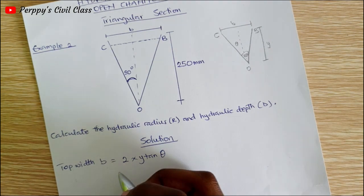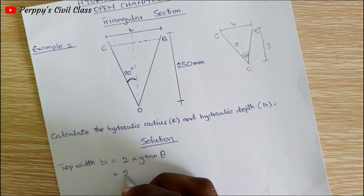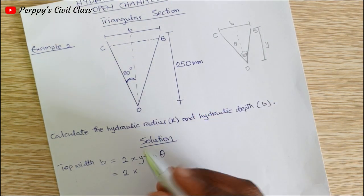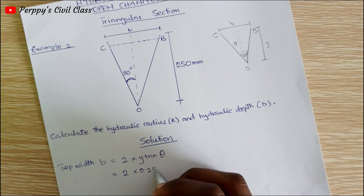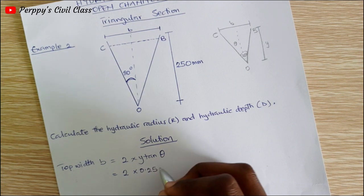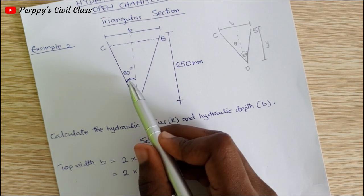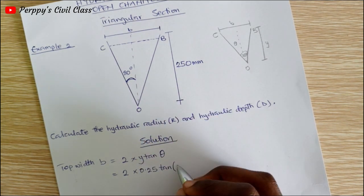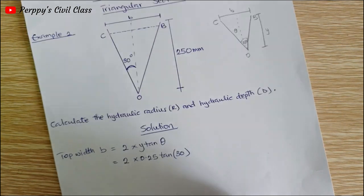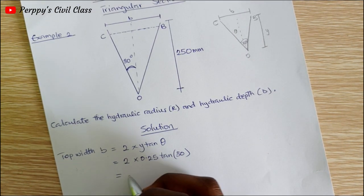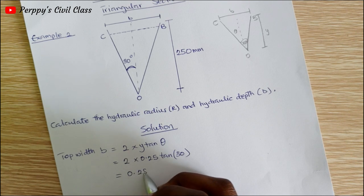So we have two times our y which is 250 mm or 0.25 meters, tan 30 degrees. This is giving us 0.288 meters, that is the b.